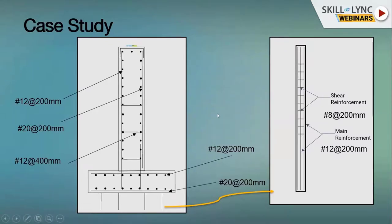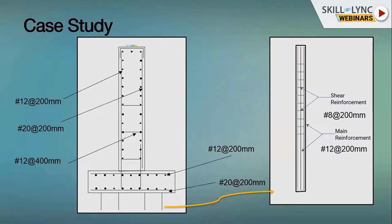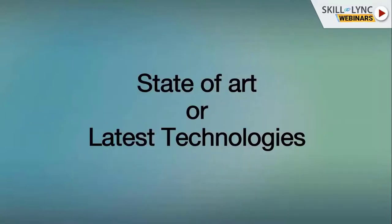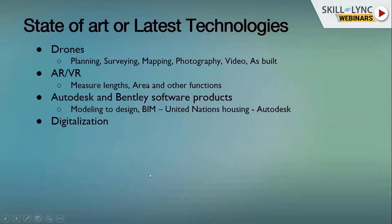This case study is not about how to calculate — it's just to help you understand how reinforcements would be provided. It's a rough example. You can see the dowels, and the code specifies how much length must enter the pile cap to act as anchorage. All these details need to be dealt with when we go into exact calculations.